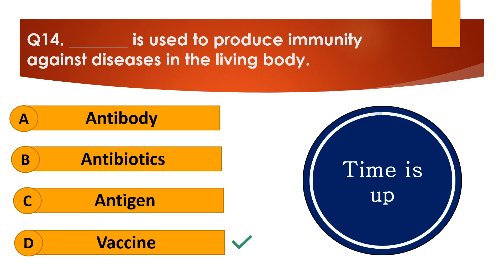Your time is up and the right answer is option D — Vaccine. Vaccine is used to produce immunity against diseases in the living body.